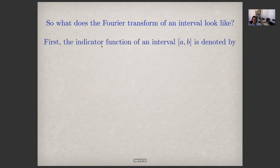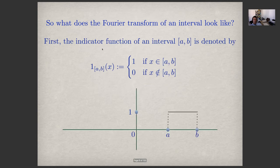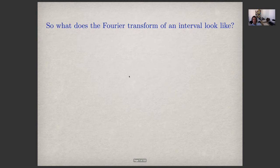What does the Fourier transform of an interval look like? First, let's define the indicator function of an interval. It has this simple graph: it's one if x is inside the interval, zero if x is outside the interval. Now let's see what its Fourier transform is.